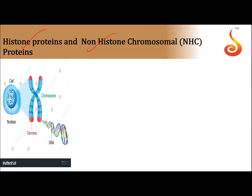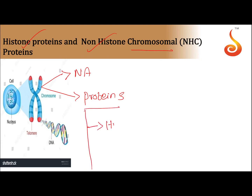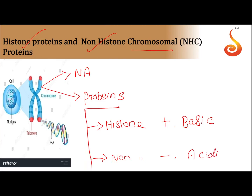Chromosomes are made up of nucleic acid and proteins. Two types of proteins are present in chromosomes: histone proteins and non-histone chromosomal proteins. Histone proteins are positively charged basic proteins, while non-histone proteins are negatively charged acidic proteins.